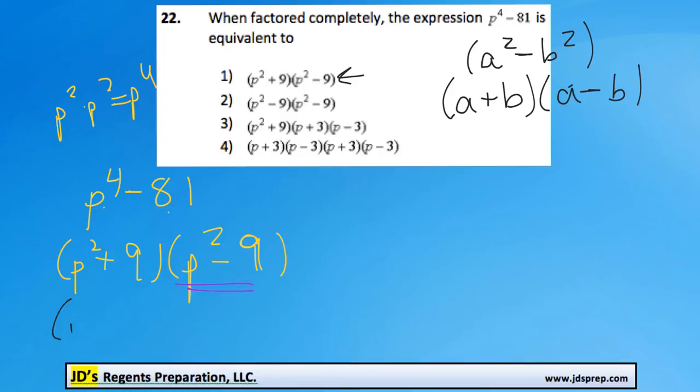So what we can do, p squared plus 9 is going to stay the same, because that's not a difference of squares, that's a sum of squares. Nothing we can do to factor that. But we can factor p squared minus 9.